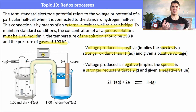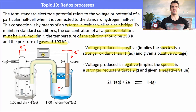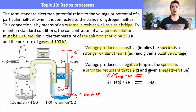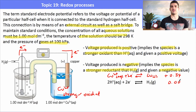For example, when hydrogen is connected to copper, hydrogen is the negative electrode and copper is the positive electrode, so electrons flow from hydrogen to copper. In the copper half cell, Cu²⁺ must be a stronger oxidant because it forces H₂ to undergo oxidation. H₂ is the stronger reductant, forcing Cu²⁺ to undergo reduction. Copper is assigned a positive E° value of +0.34 V and sits above hydrogen on the electrochemical series.